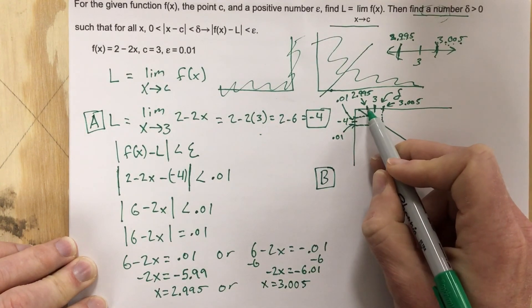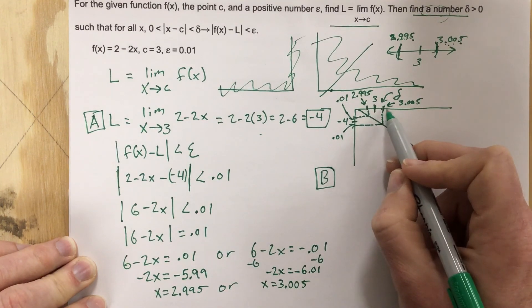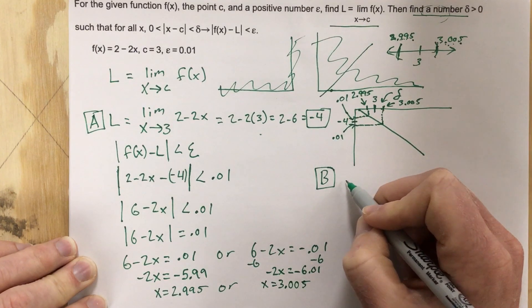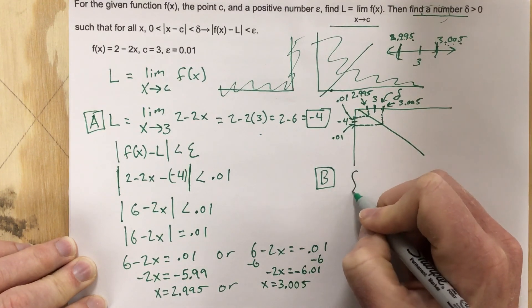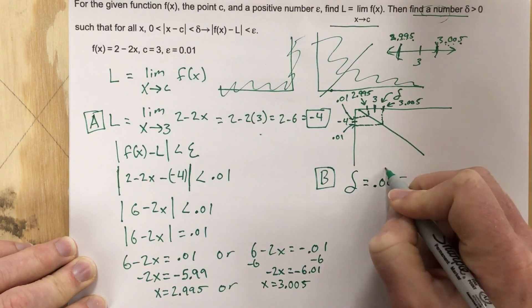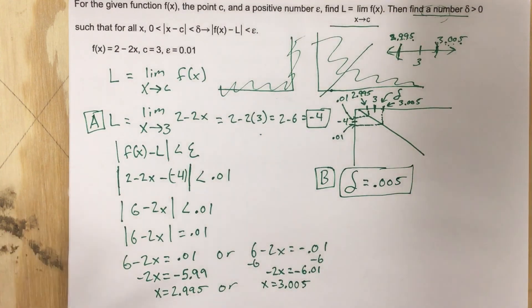Well, what's the difference between 2.995 and 3? That's 0.005. And what's the difference between 3.005 and 3? Well, that's 0.005. So for part B, delta is 0.005.